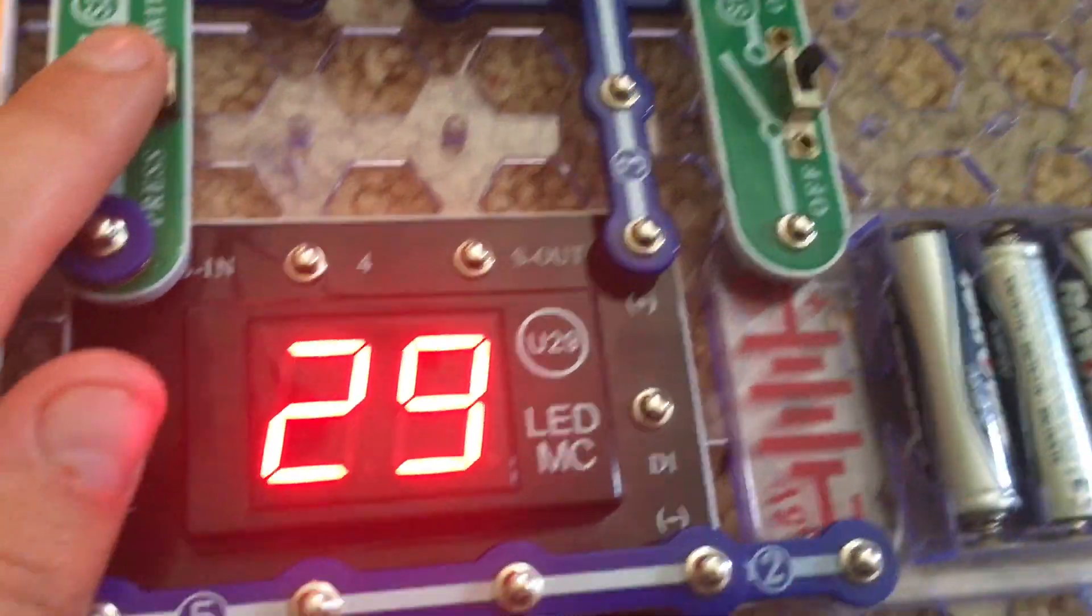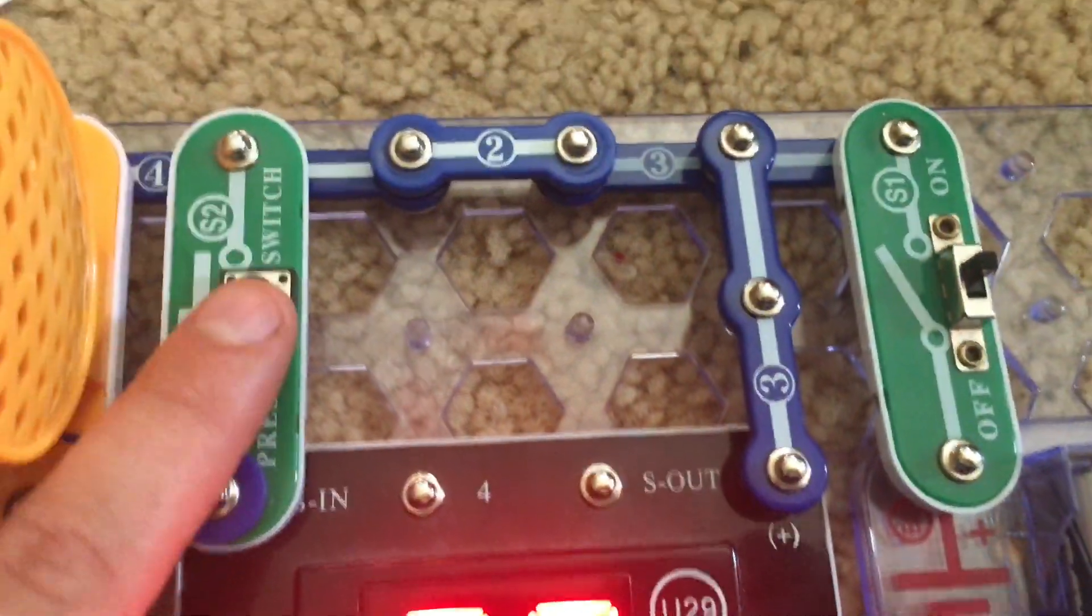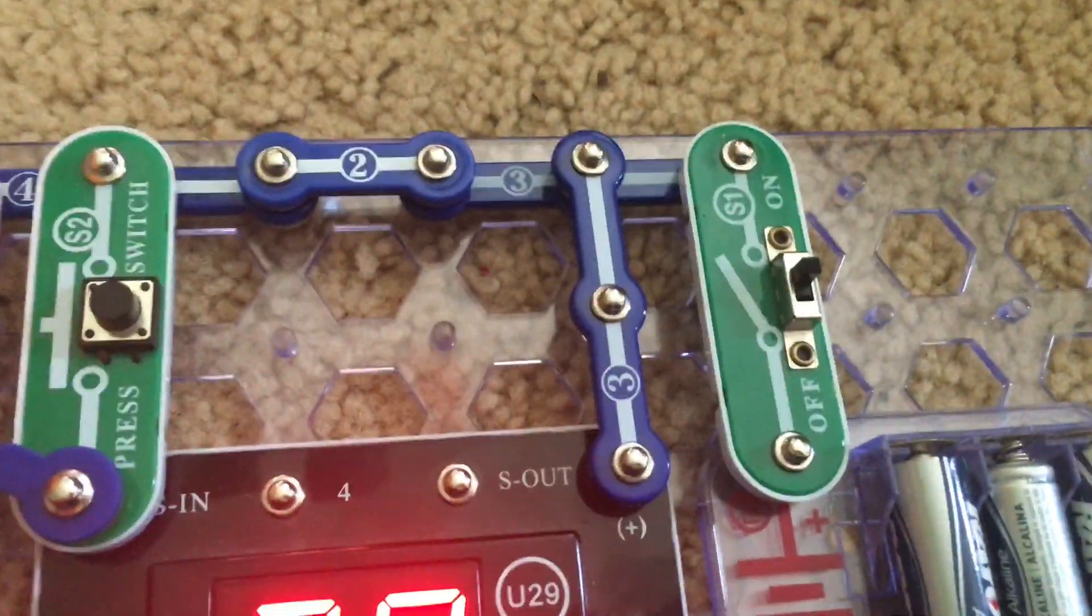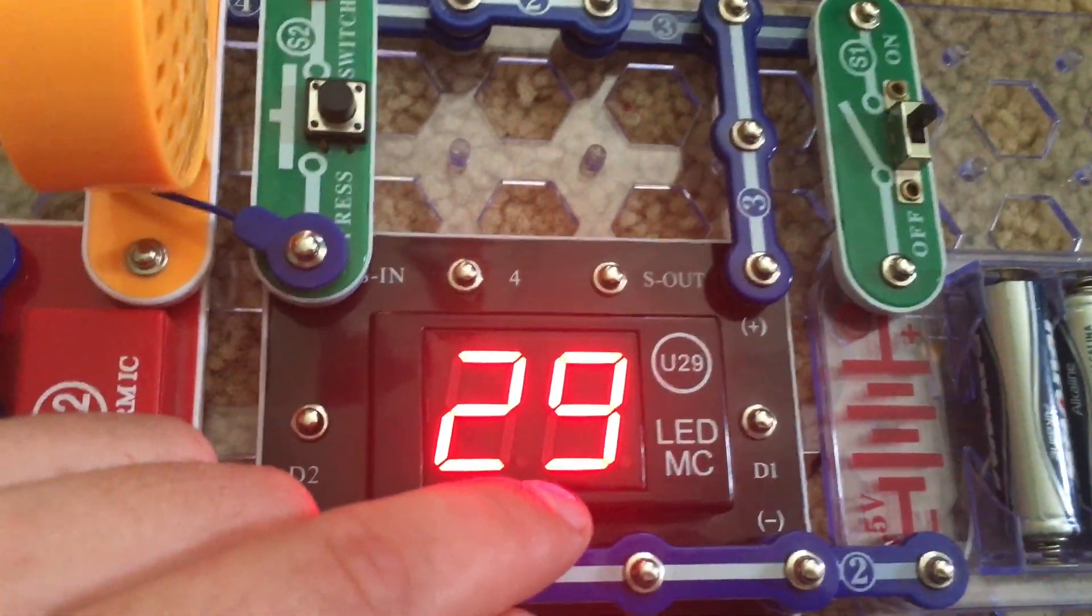Basically, the U29 display counts how many times you hit this switch, and the alarm integrated circuit provides sound effects.